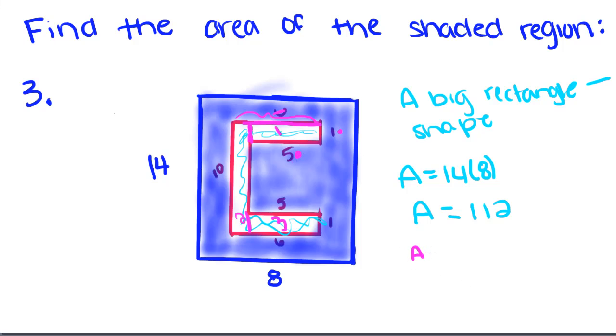And this is going to be 5 times 1. So the area of rectangle 1, R1, is equal to 5 times 1, which is just 5.